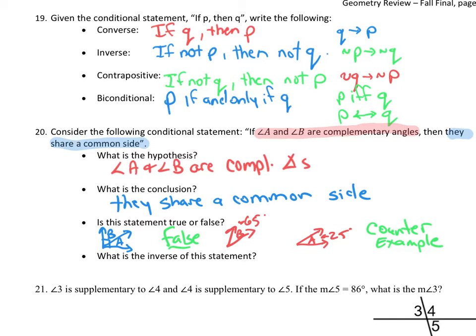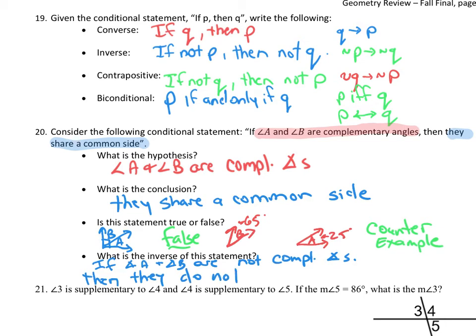Now they want us to write the inverse — just negate both parts. If angle A and angle B are not complementary angles, then they do not share a common side. That is the inverse of that statement.